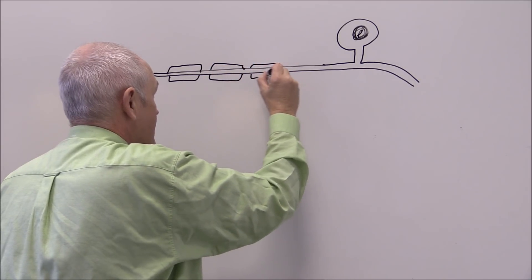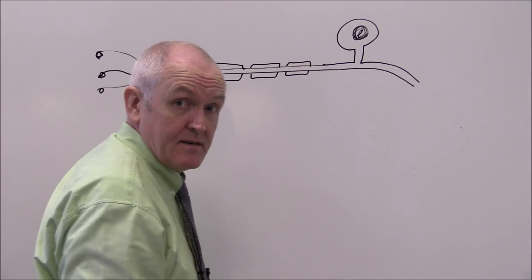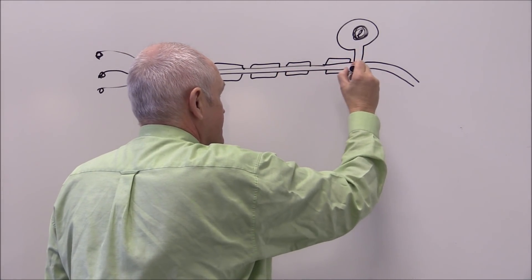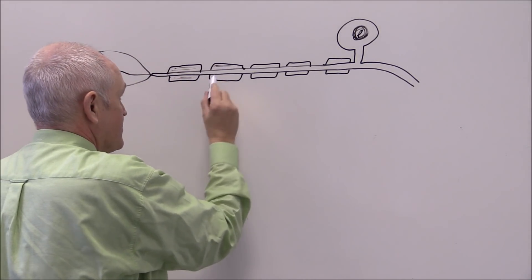The Schwann cells nourish, protect, insulate, and facilitate the process of saltatory transmission.